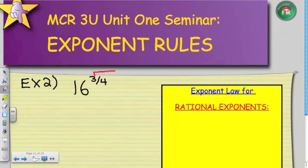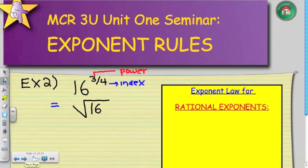Now, remember, the 3 is my power. 4 is going to refer to my index. So inside the bracket, I have radical 16, and I'm going to take the fourth root of that. And everything is going to be to the power of 3.